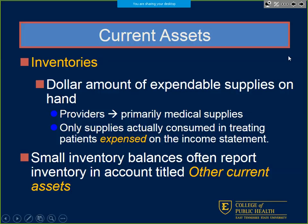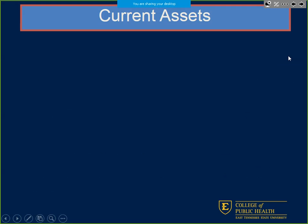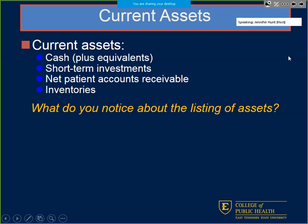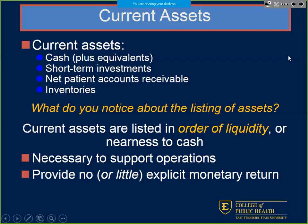Only supplies consumed while treating patients are expensed out on the income statement and the balance sheet — we only expense supplies when we use them in patient care. Small inventory balances are sometimes put under other current assets. Current assets are put in order of liquidity: cash, short-term investments, net patient accounts receivable, and inventory — because inventory has potential to sit on the shelf for a long time without a good pool system.